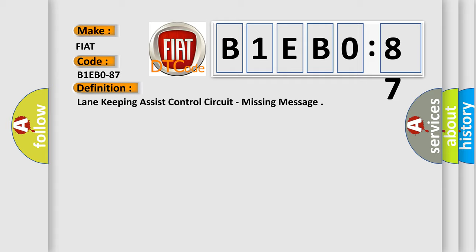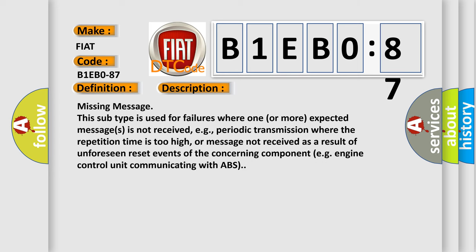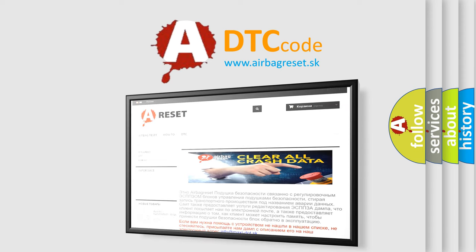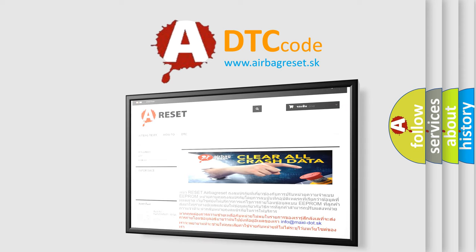Here is a short description of this DTC code. The 'missing message' subtype is used for failures where one or more expected messages is not received — for example, a periodic transmission where the repetition time is too high, or a message not received as a result of unforeseen reset events of the concerning component, such as an engine control unit communicating with ABS. Thank you for your attention and stay tuned for the next video.